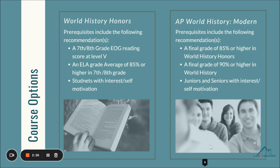Additional course options for World History include World History Honors and AP World History. The prerequisite recommendation for World History Honors includes a seventh and eighth grade EOG reading score of level 5 and a grade average of 85% or higher in seventh and eighth grade English language arts. The prerequisite recommendation for AP World History includes an 85% or higher in World History Honors or a final grade of 90% or higher in World History. This course is recommended for juniors and seniors with student interest or self-motivation.